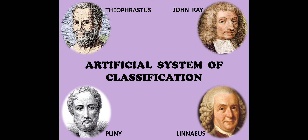After Aristotle put forward his classification, a number of other philosophers and scientists put forward their own theories regarding the artificial classification of animals. Among these were Theophrastus, John Ray, Pliny, and Linnaeus — all of these people added to Aristotle's animal classification, gave more information, and made it more meaningful.